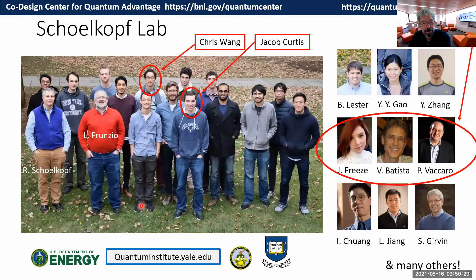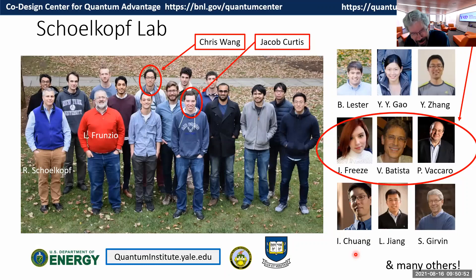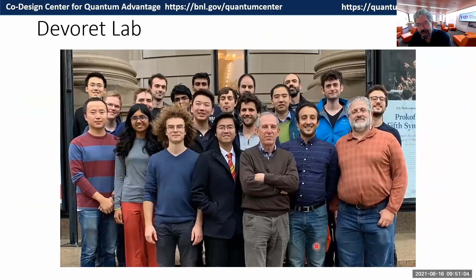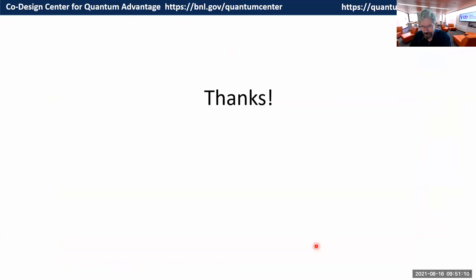I'd like to thank the experimentalists in Rob Schoelkopf's group — Chris Wang and Jacob Curtis led this experiment. We learned a lot from talking to our chemist collaborators, and Ike Chuang helped us figure out the gain compared to doing this experiment on a qubit-based computer. I'll also thank my colleagues in the Devoret lab with whom we collaborate closely.